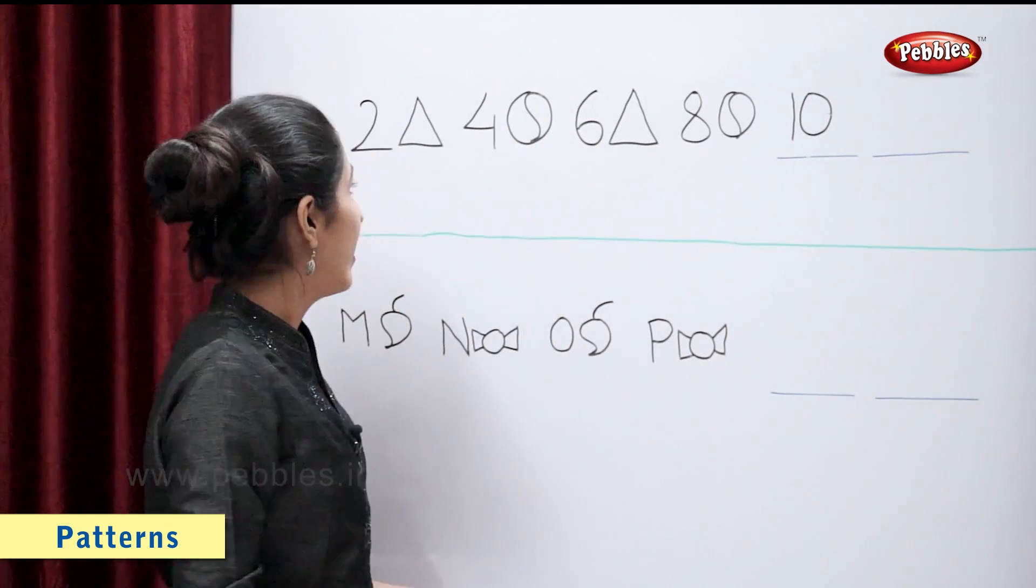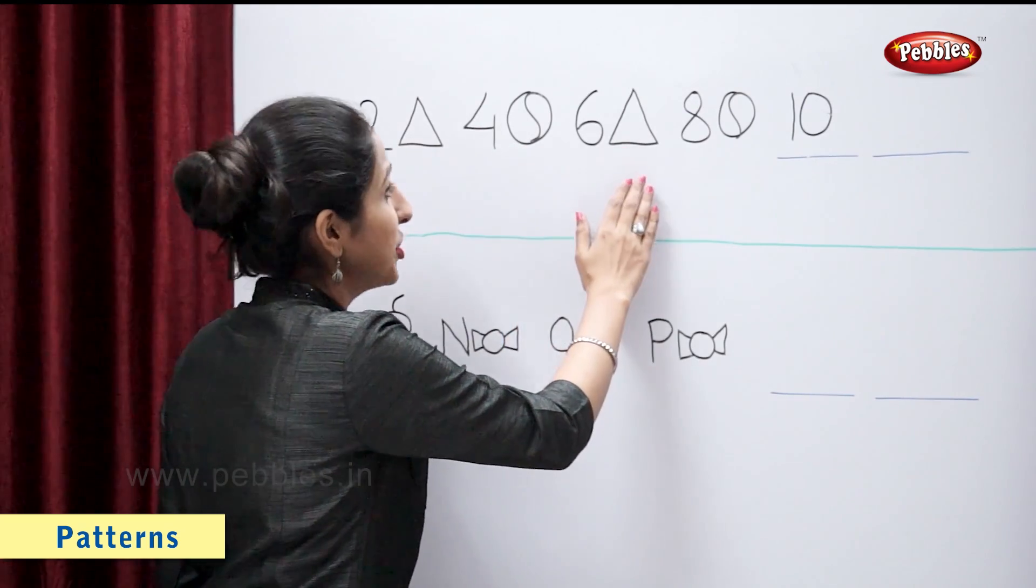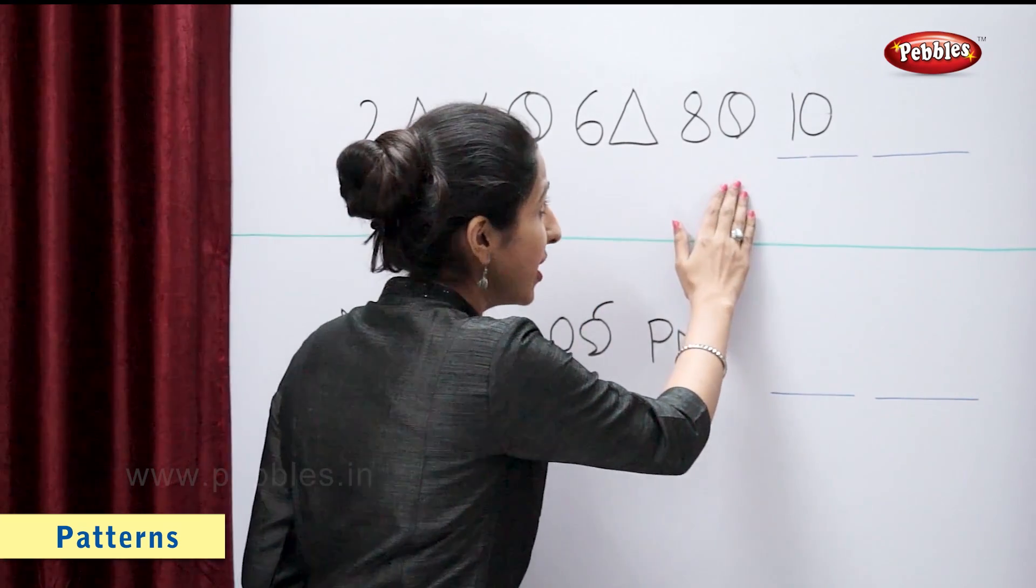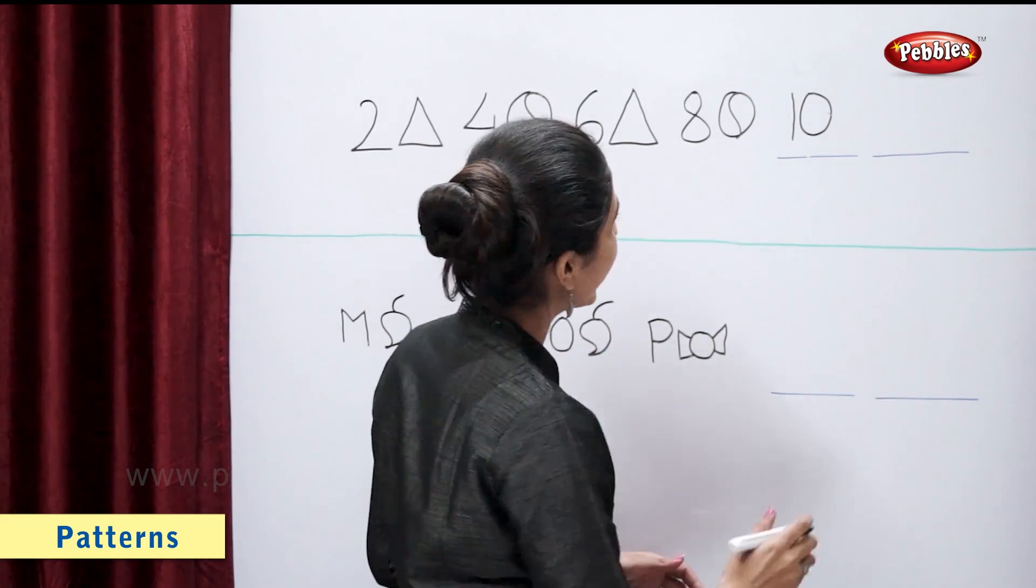The shapes are triangle, ball, triangle, ball. So the next shape is? Correct, a triangle.